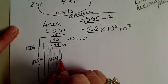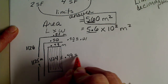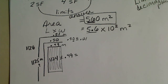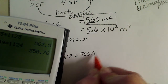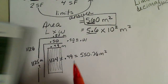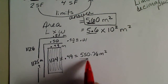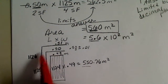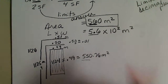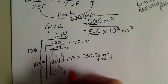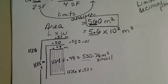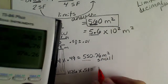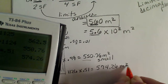If we take 0.49 times 1124, that area would be 550.76 square meters — so our area could be as small as about 550. Or we could take the larger uncertainties: 1126 times 0.51, and we get 574.26 square meters. So the area could be as large as about 574 square meters.